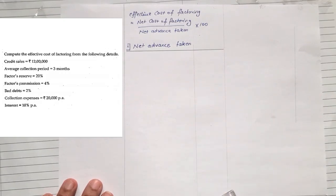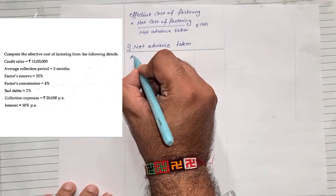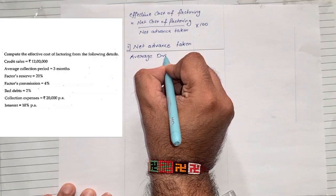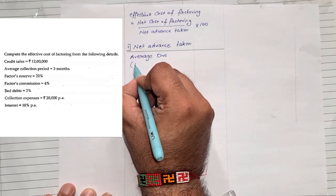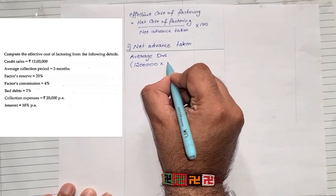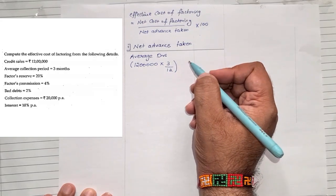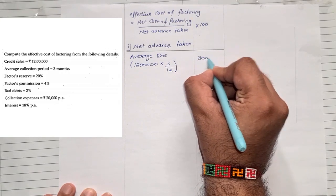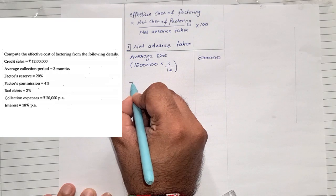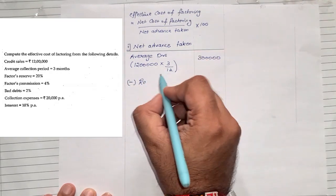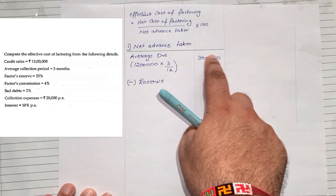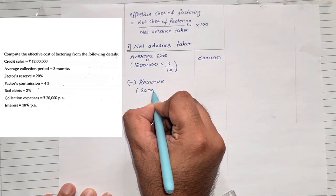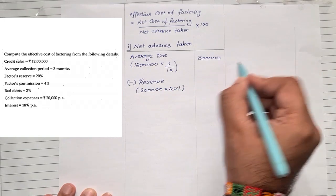As per the format, the very first thing will be average debtors. In the question, credit sales is 12 lakhs per annum and the average collection period is 3 months. So average debtors will be 12 lakhs into 3 months divided by 12, which gives us average debtors of 3 lakhs. Next, less factor reserves — in the question, factor reserve is 20%, so it will be 3 lakhs into 20%, which comes to 60,000.